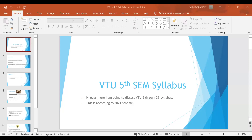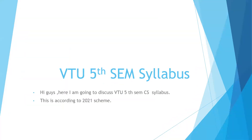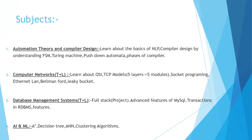Hello friends, today we will be discussing about the CS syllabus — this is the 2021 scheme and the subjects are as you can see: Automata Theory and Compiler Design. Compiler Design was previously a separate subject in sixth semester, but now they have clubbed Automata Theory and Compiler Design together. In Automata Theory you will learn about basics of NLP and Compiler Design.